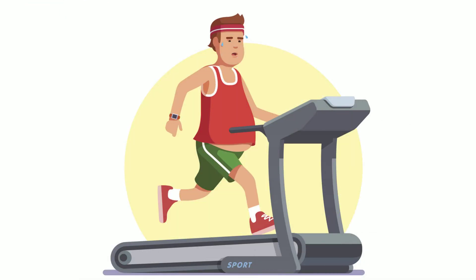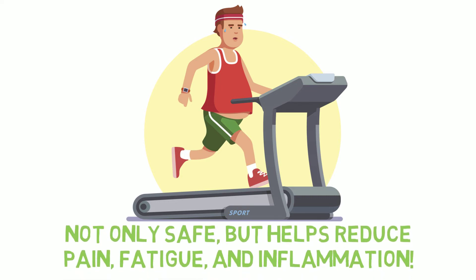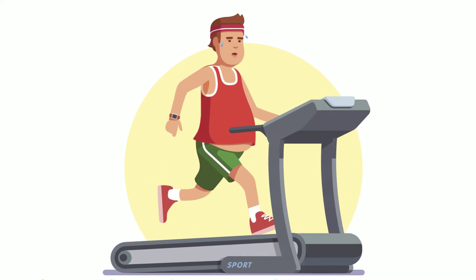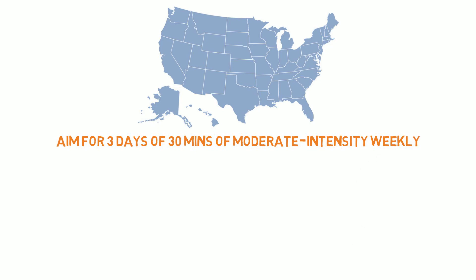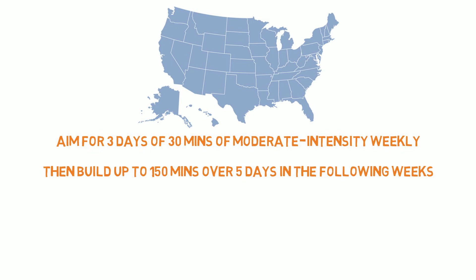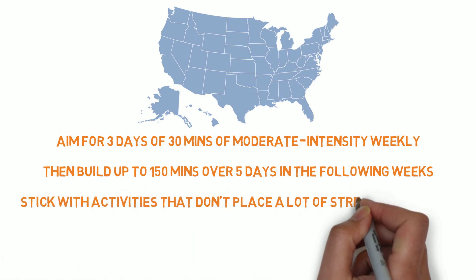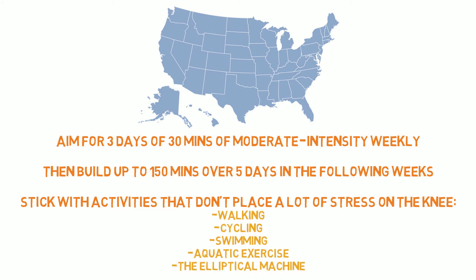Next, another method to help knee OA is cardio. A common misconception among many is that cardio will worsen the disorder. In fact, it is not only safe, but according to the American College of Sports Medicine it helps reduce pain, fatigue and inflammation. Although it is important not to rush into strenuous exercise and gradually ease into it over several weeks instead. The American College of Sports Medicine indicates that if you are just starting off, you should aim for 3 days of 30 minutes of moderate intensity exercise weekly — a pace where you would be comfortably able to talk to a friend while doing it — then build up to a total of 150 minutes over 5 days in the following weeks. When it comes to aerobic exercise and knee osteoarthritis, it is advised to stick with activities that don't place a lot of stress on the knee, like walking, cycling, swimming, aquatic exercise and using the elliptical machine. And of course, keep in mind that cardio will assist in weight loss outcomes too.